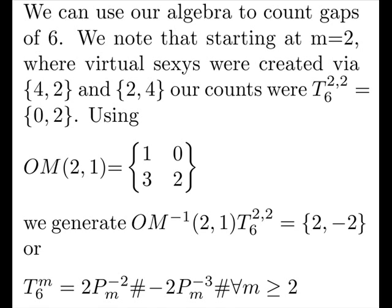Constructing our matrix as follows, we then invert it, multiply it by our type counts, and we get that the type count of 6 is twice the second minor primordial minus twice the third minor primordial for all M greater than 2.